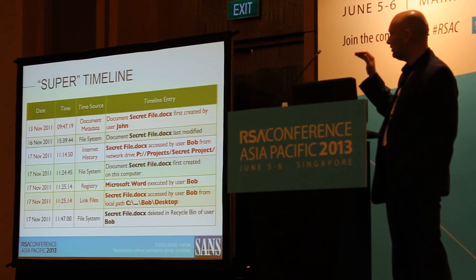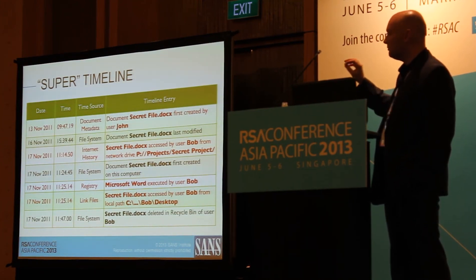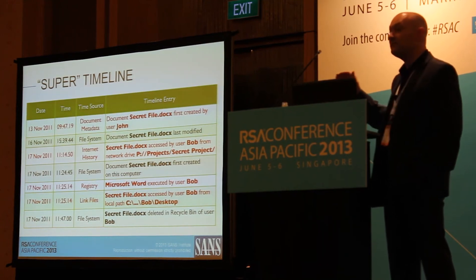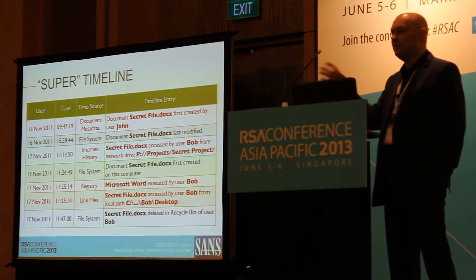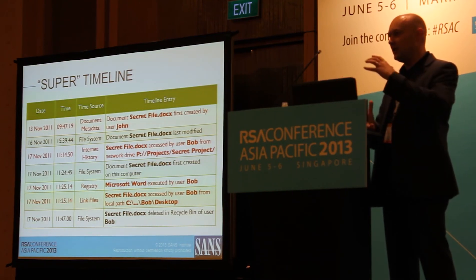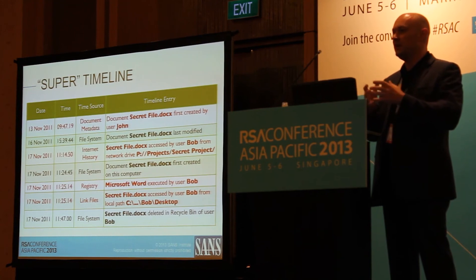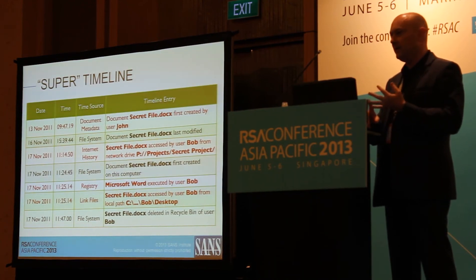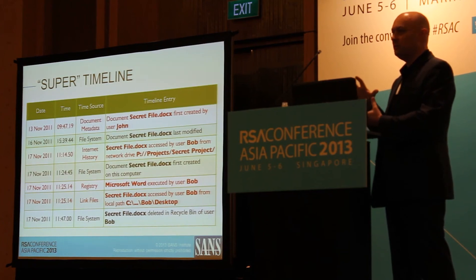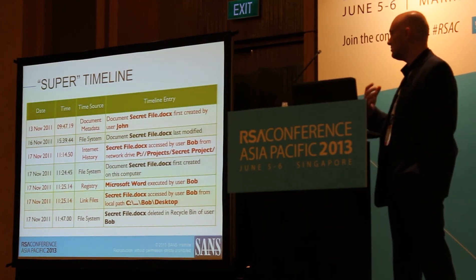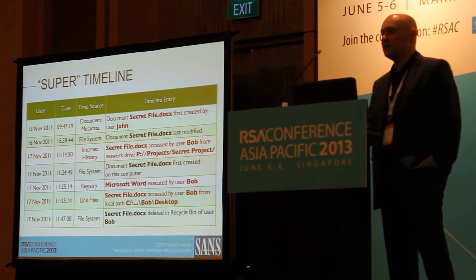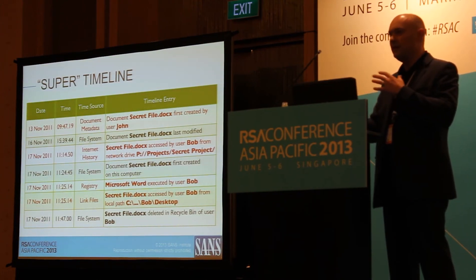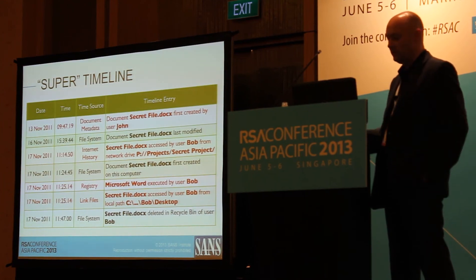For example, you might pull creation details from inside a document's metadata, information from a Word registry key showing execution of Microsoft Word opening that file, and a link file corroborating the user's access to the file from a server location. When you put all of this together, you get incredible context around the file — not just when it was created or last accessed, but where did it come from, how did it get there, which users were involved, what did they do with it. Forensics is really about context, and that context is what makes a strong investigation.